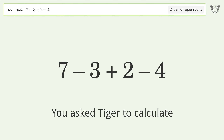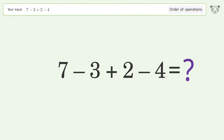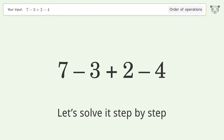You asked Tiger to calculate this. It deals with the order of operations. The final result is 2. Let's solve it step by step.